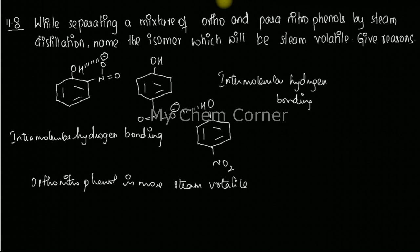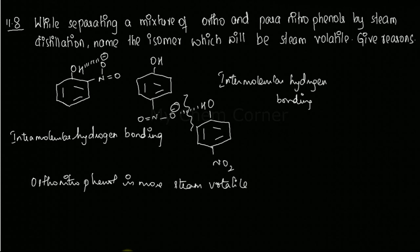In intramolecular hydrogen bonding, the bonding is contained within the molecule itself, so when it becomes steam volatile, it doesn't need to break hydrogen bonds with another molecule. In intermolecular hydrogen bonding, those bonds must first break before steam volatility can occur. Therefore, paranitrophenol is more stable and less volatile, while orthonitrophenol — with the least stability due to intramolecular hydrogen bonding — is easily steam volatile and evaporates with steam.